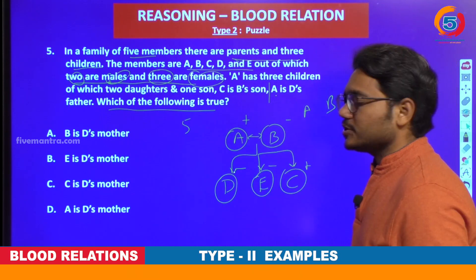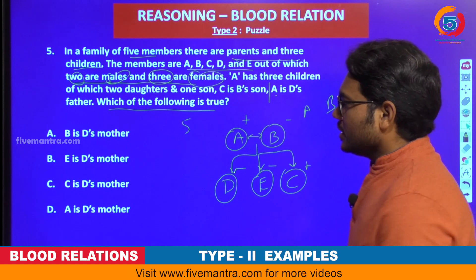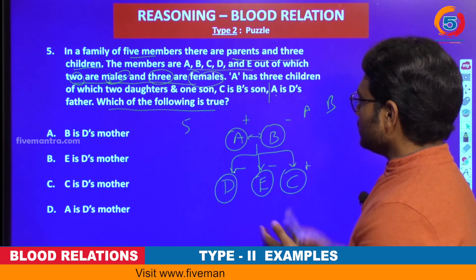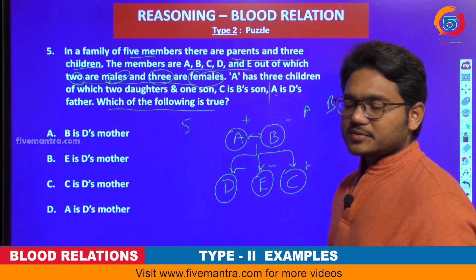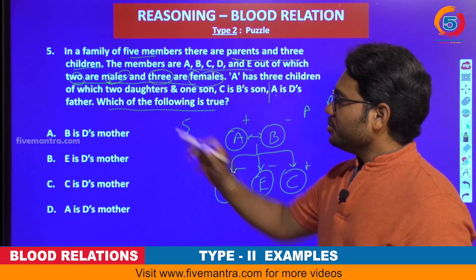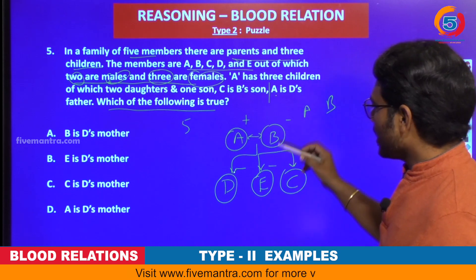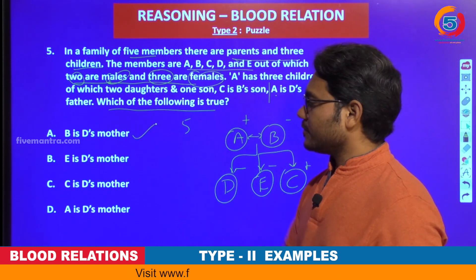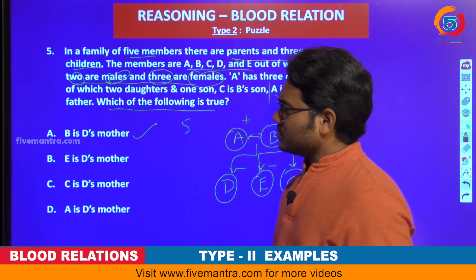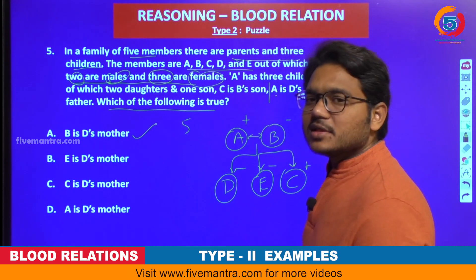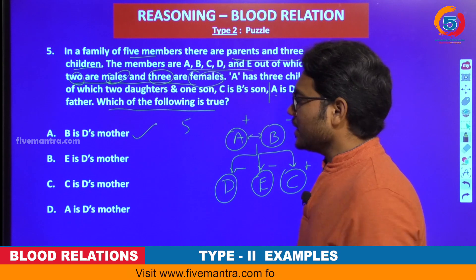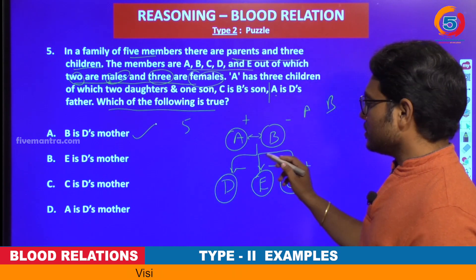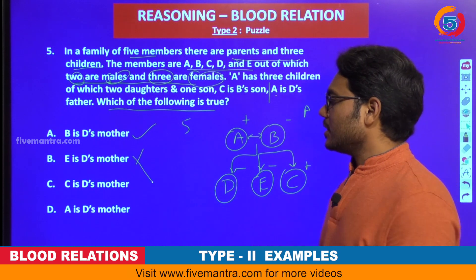What is asked? Which of the following is true? Try to observe which among the options will be true according to this tree. First option: B is D's mother. Is it true? It is solved right at the very first option.